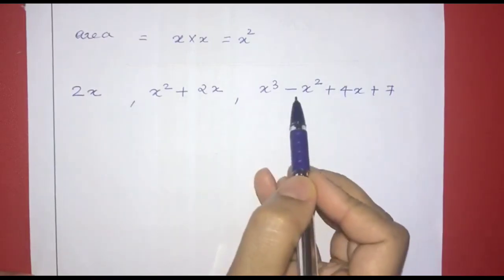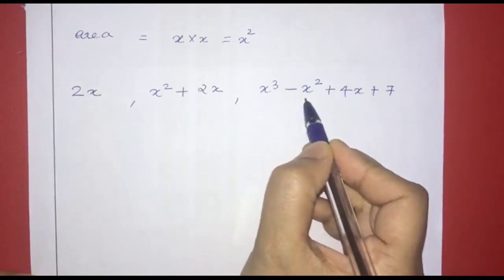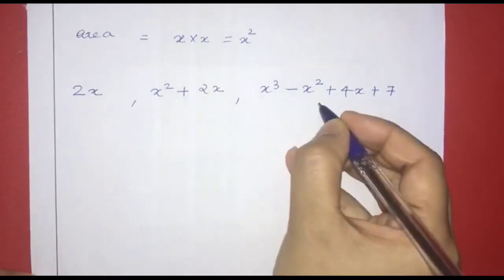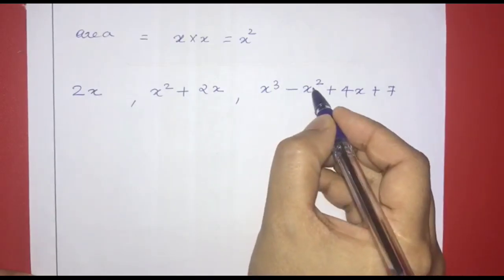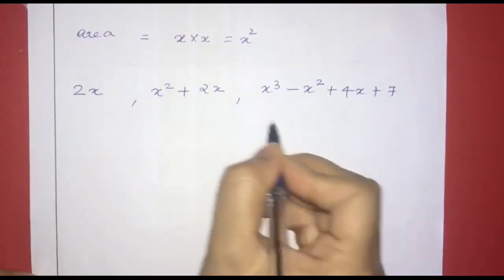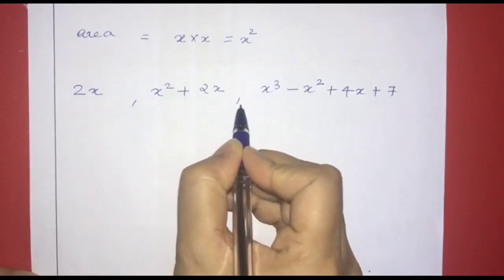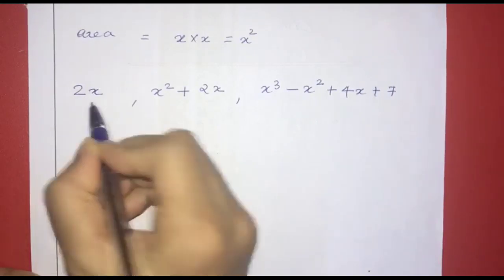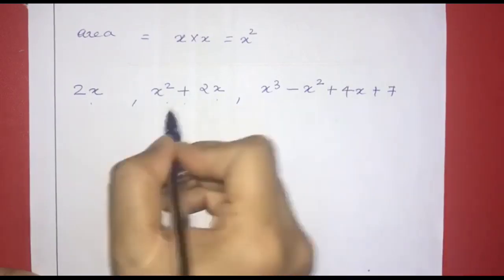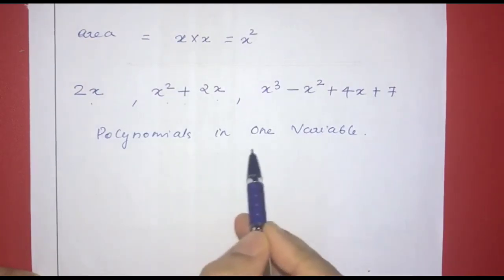We have 3 algebraic expressions: 2x; x squared plus 2x; x raised to 3 minus x squared plus 4x plus 7. These 3 are algebraic expressions in x. In these expressions, we have x raised to 2 and higher powers. These expressions are called polynomials. Each has one variable, x. We call these polynomial in one variable.